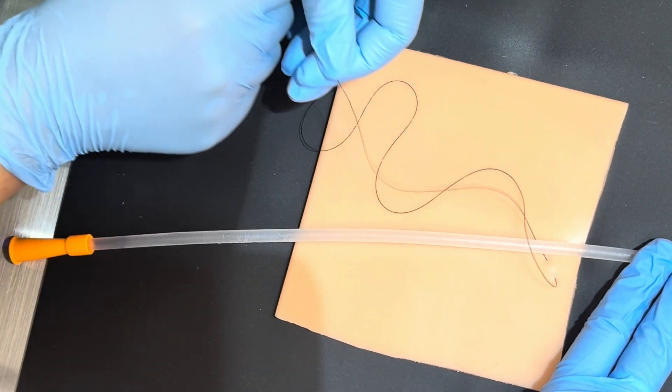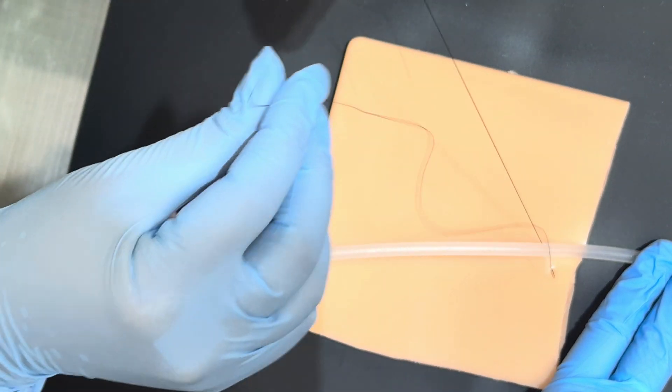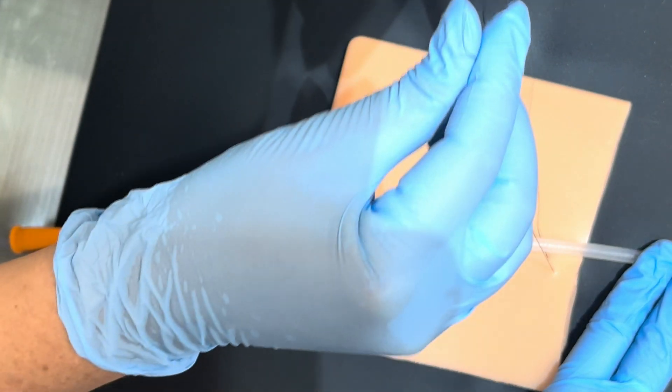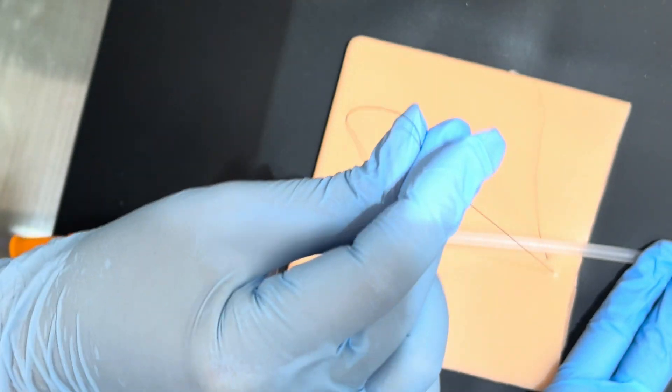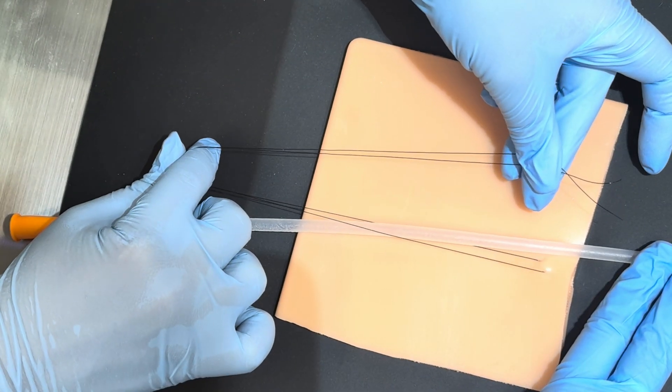I've got my suture here. I'm going to go ahead and start my finger trap. I'm going to attempt to make this suture approximately equal so I have plenty of it here. Ends are approximately equal.